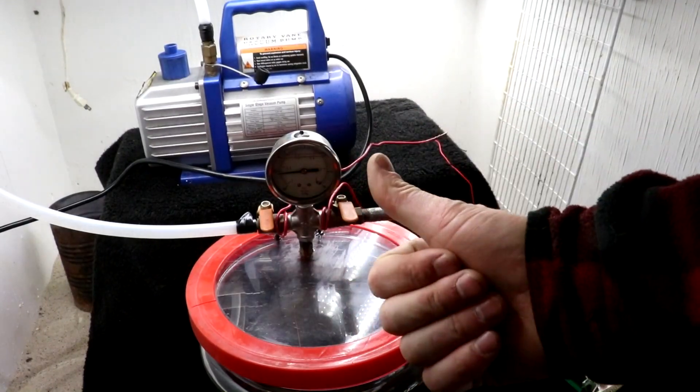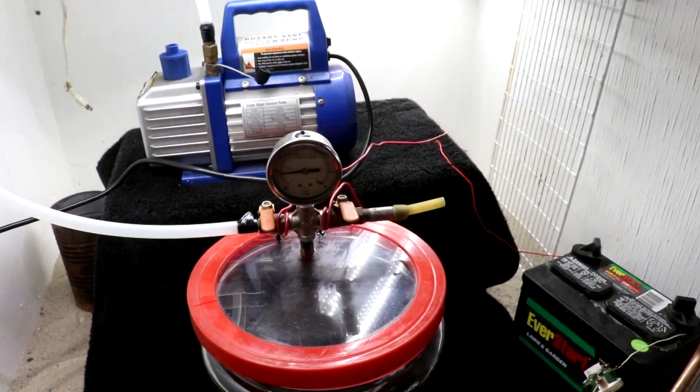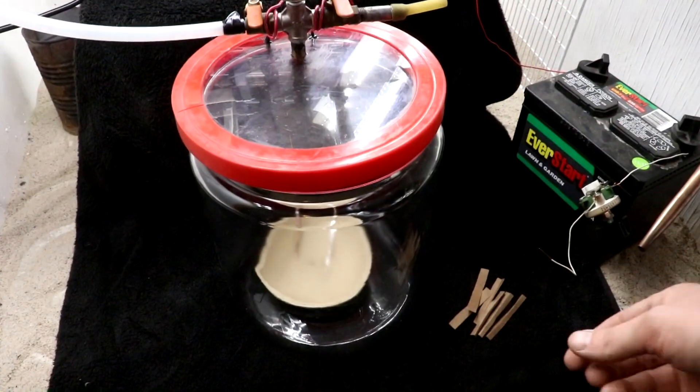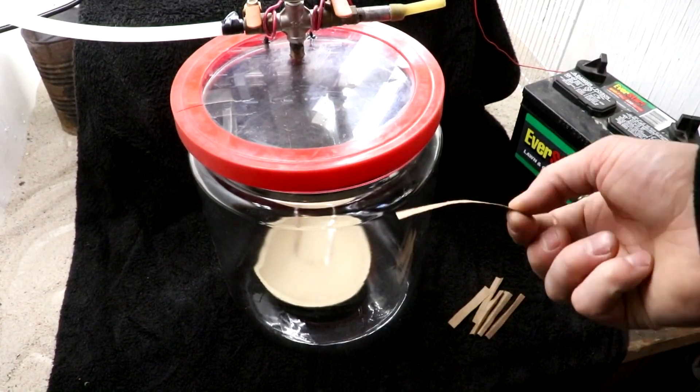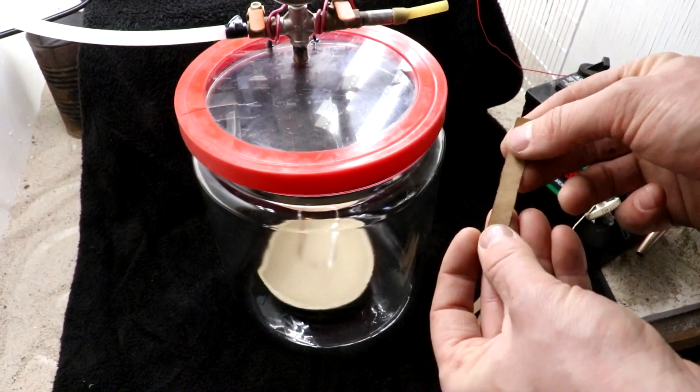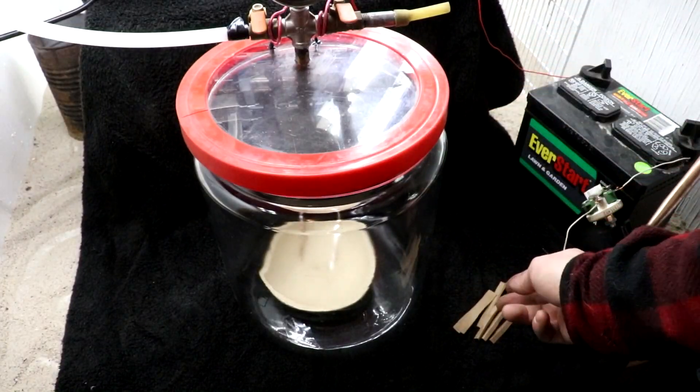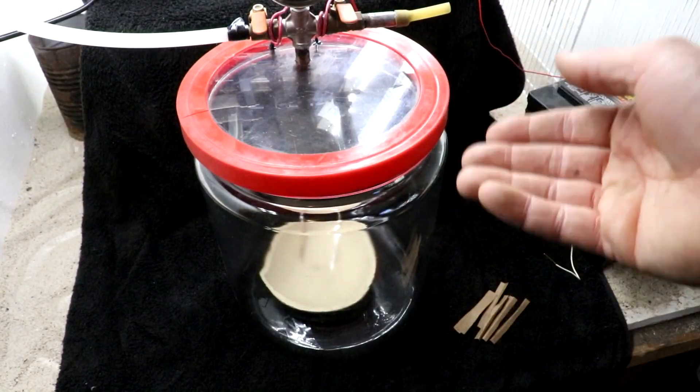All right everyone, welcome back to Cody's Lab. In today's video, the goal is to burn some bits of paper. These are 100 milligram strips of brown paper bag in an atmosphere of pure oxygen, but at reduced pressure.